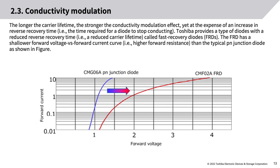The FRD has a shallower forward voltage versus forward current curve, i.e., higher forward resistance than the typical PN junction diode, as shown in the figure.